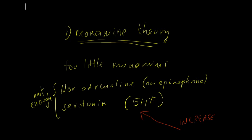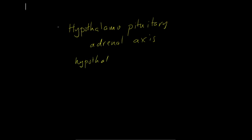The next theory is that it's actually got something to do with the hypothalamo-pituitary-adrenal axis. So you might remember that the hypothalamus—this is theory number two—controls the pituitary, and the pituitary controls the adrenal glands through ACTH.